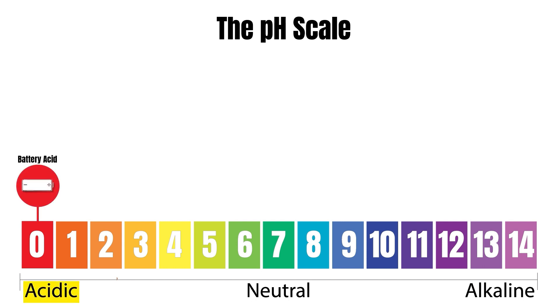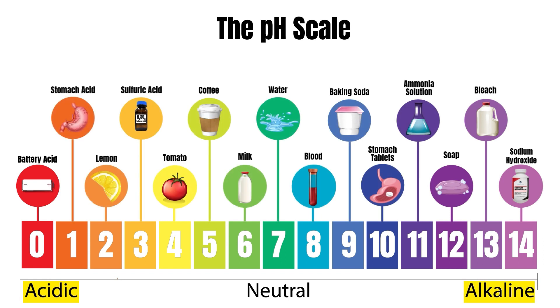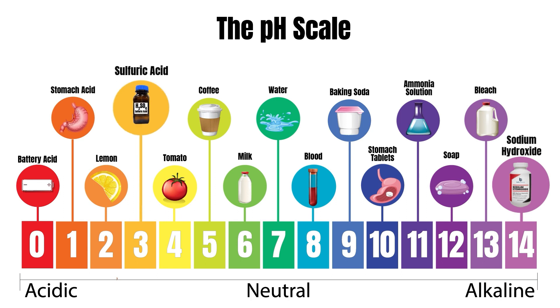On the scale, 0 is extremely acidic while 14 is extremely basic. For instance, sodium hydroxide is a very basic or alkaline material, while sulfuric acid is a strong acid.